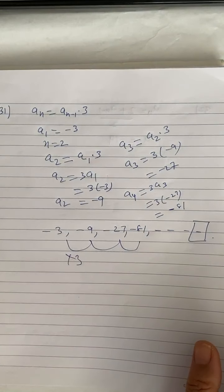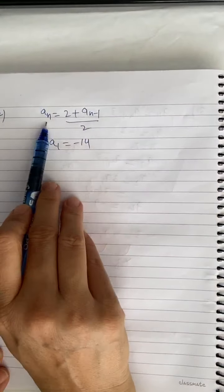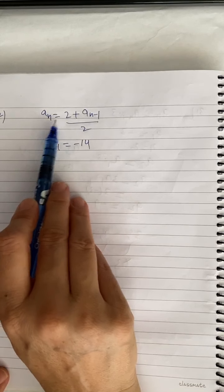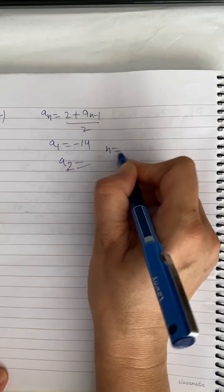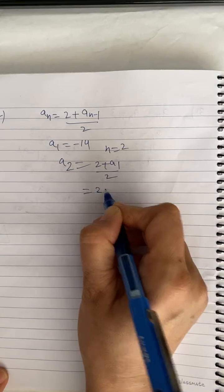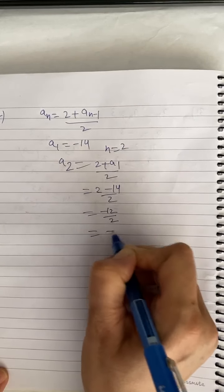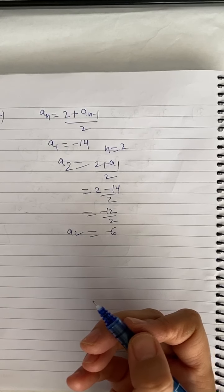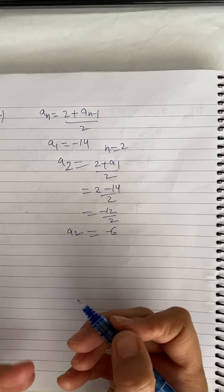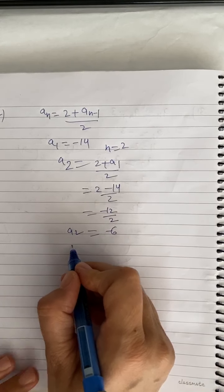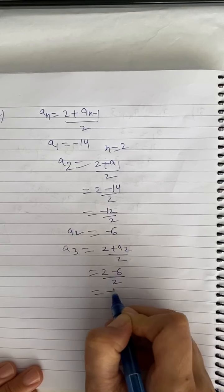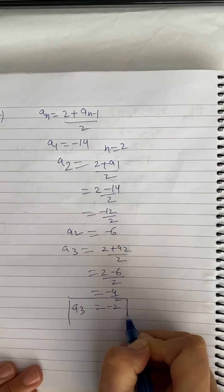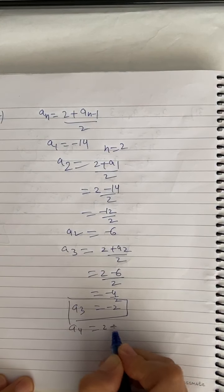With a general term formula you can find any specific term directly, but recursive rules require working through previous terms. The last example: a_n = (2 + a_(n-1)) / 2, with a1 = -14. For n = 2: a2 = (2 + a1) / 2 = (2 + (-14)) / 2 = -12 / 2 = -6. For a3: a3 = (2 + a2) / 2 = (2 + (-6)) / 2 = -4 / 2 = -2.